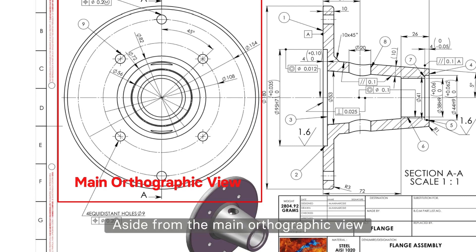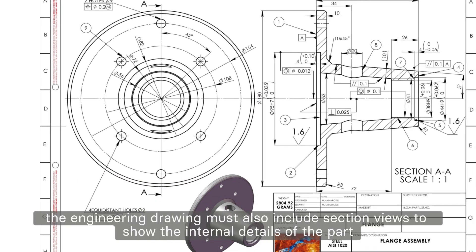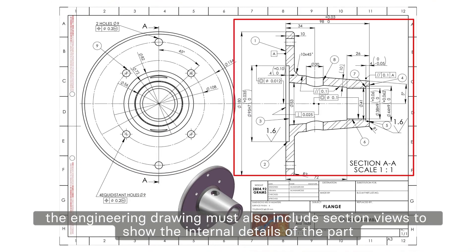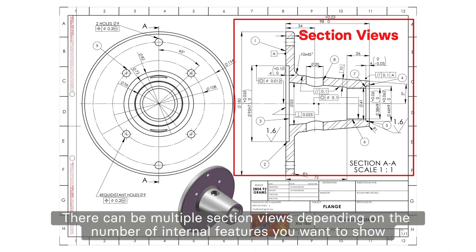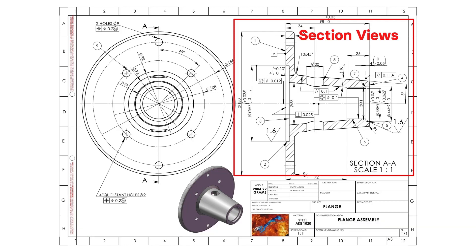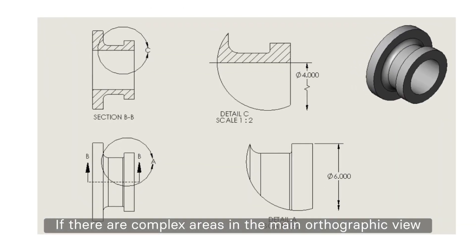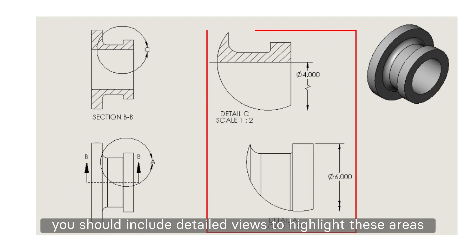Aside from the main orthographic view, the engineering drawing must also include section views to show the internal details of the part. There can be multiple section views depending on the number of internal features you want to show. If there are complex areas in the main orthographic view, you should include detailed views to highlight these areas.